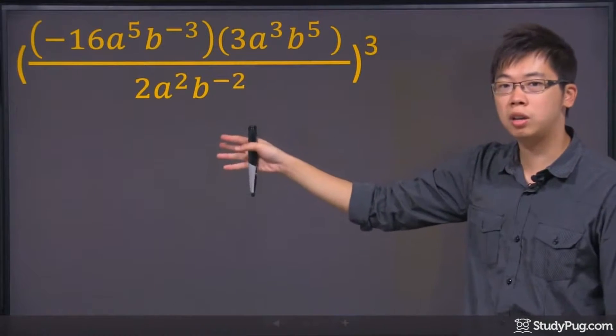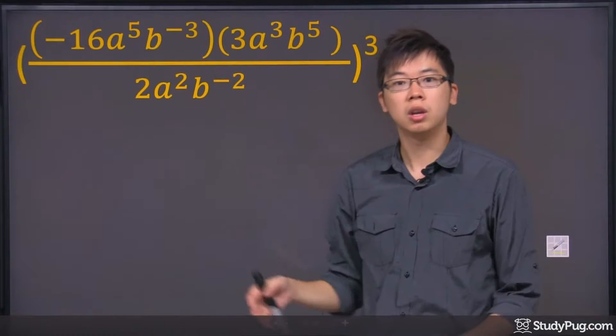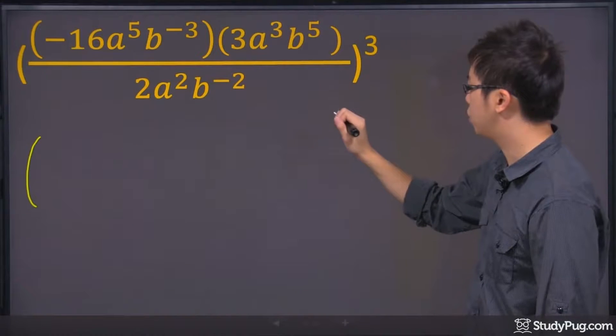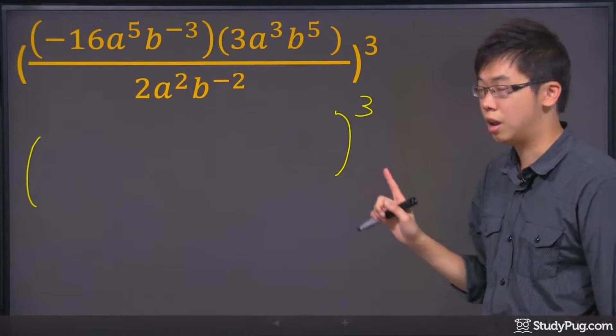Everything here is multiplying and dividing. We've got A and B with some numbers in the front. So let's deal one thing at a time. Let's have the bigger brackets on the outside, just to remind ourselves that we're going to do the power of three at the very end.